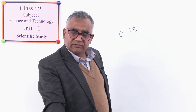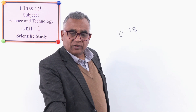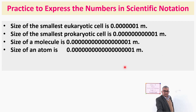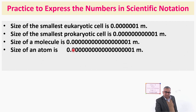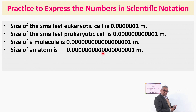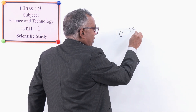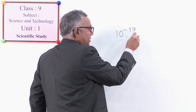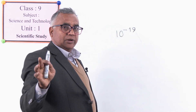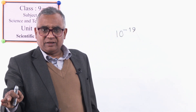Next number: size of atom. After the decimal there are 18 zeros and then 1 — that makes 19 digits. So the answer will be 10 to the power minus 19. All of these are examples of very small numbers. Mass of the Earth is already done — 6 × 10²⁴ kg — you can easily count and write.